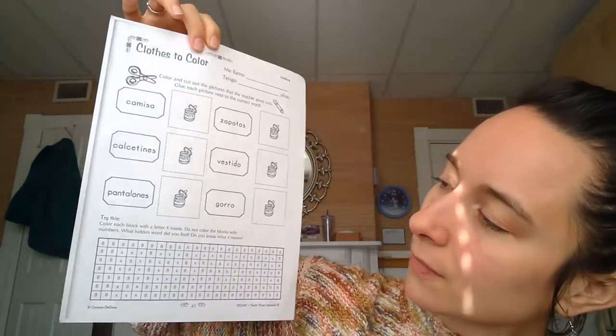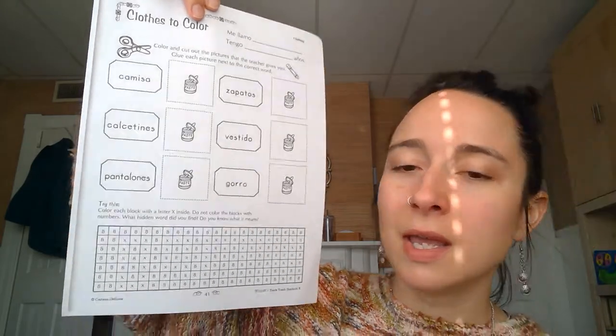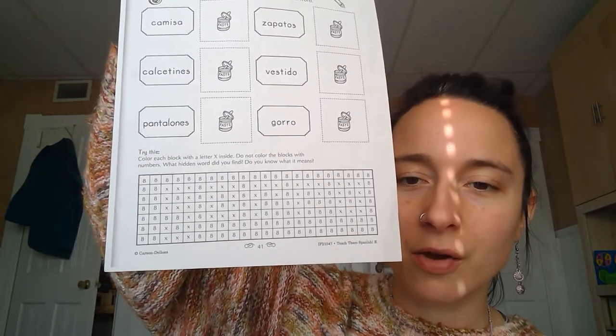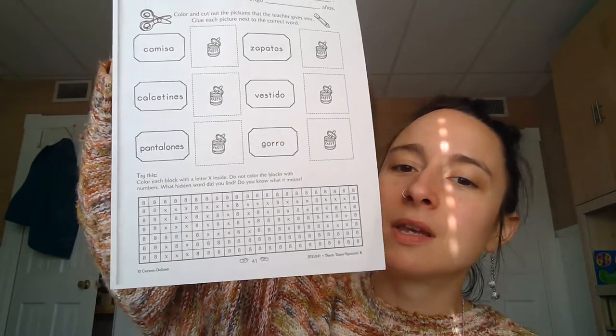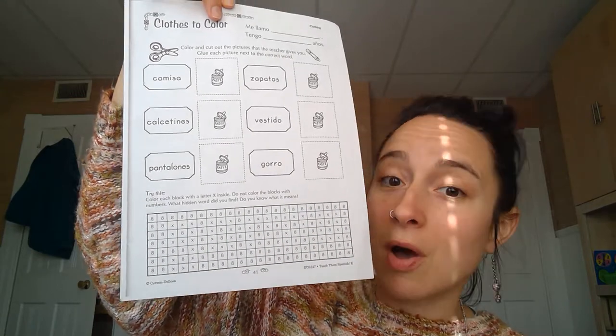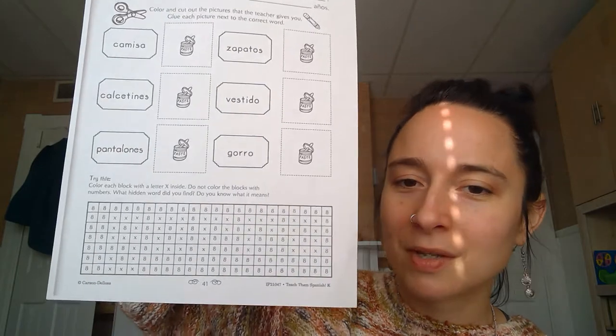What you're going to do is you are going to color each block inside that has an X in it. Once you color in all of the X's, a word is going to appear. I'll give you a clue: it's one of the words that are listed up here, so you'll be able to solve the mystery and find out what the secret word is.